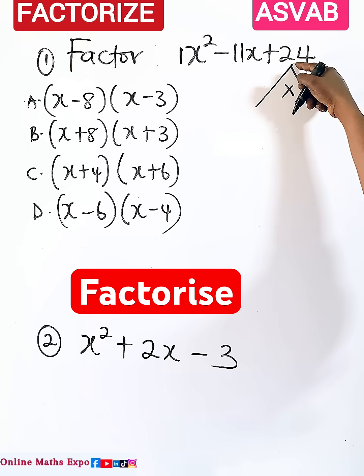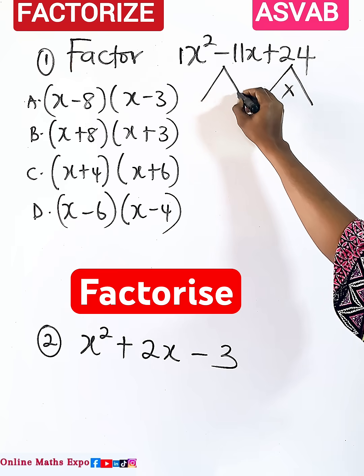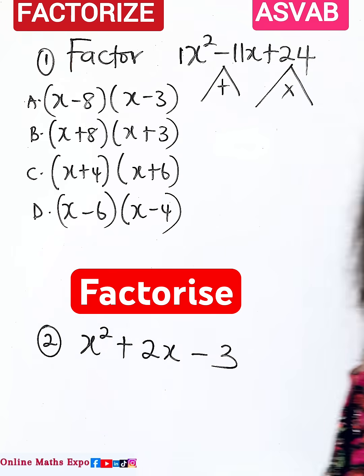What you need to do is find two numbers that when you multiply gives you this and when you add those two numbers it gives you negative 11.